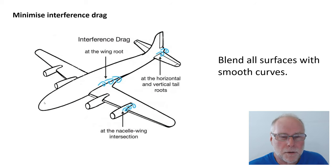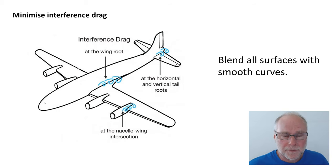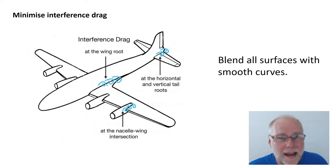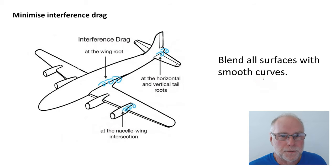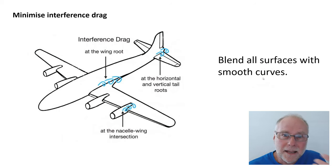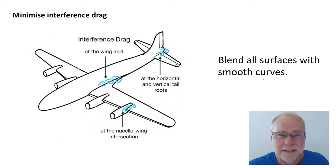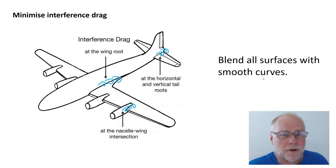Finally, we want to minimize interference drag. Interference drag occurs when two different surfaces — like the wing and fuselage of an aircraft — come together at right angles with a sharp corner. We want to smooth any of those transitions, as you can see on any modern aircraft: smooth transitions between the wing and the fuselage, between the horizontal and vertical tail components, and where the engine nacelle joins the wing. We want to blend all surfaces with smooth curves. These are things we don't typically focus on when reducing drag of a normal road car, but here we're moving into a field where boundary layers — whether laminar or turbulent — make a big difference, where smooth surfaces reduce friction, and where minimising interference drag and induced drag is critical.